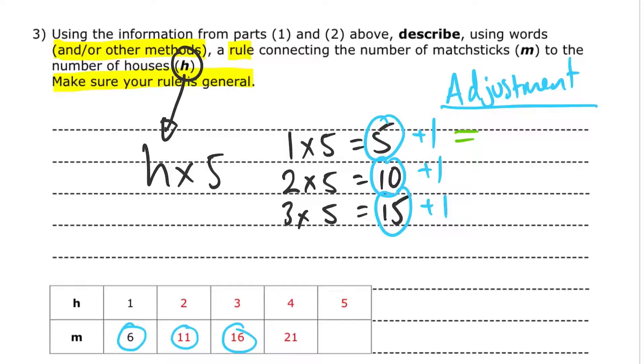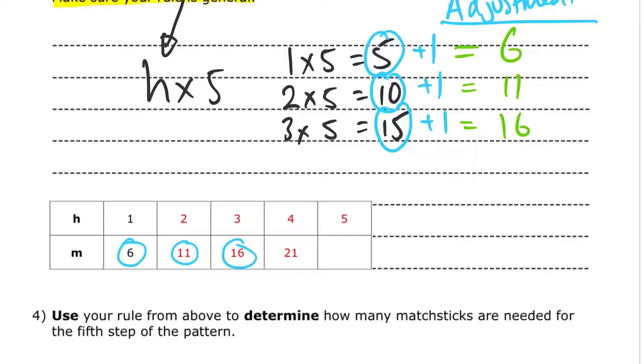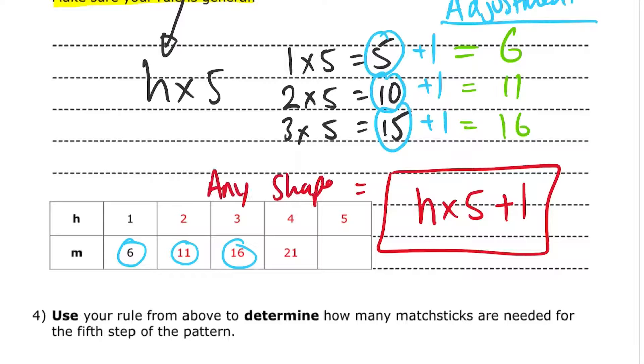So here the adjustment I need to make is plus 1. Plus 1. Plus 1. So that's going to give me 6 matchsticks for the first house, 11 matchsticks for the second house, and 16 matchsticks for the third house. So my formula is going to be H times 5 plus the 1. So that's my formula for any number of houses. Okay, we can call that the nth term.